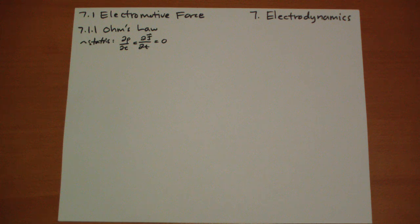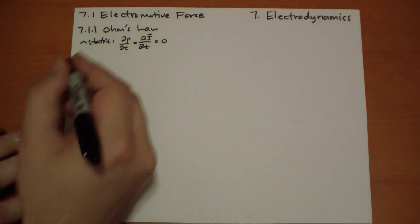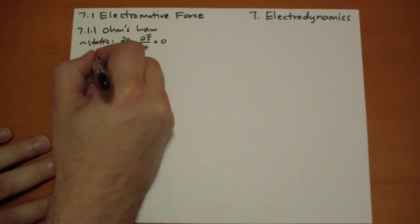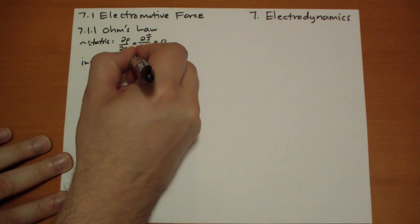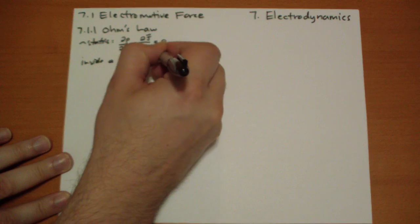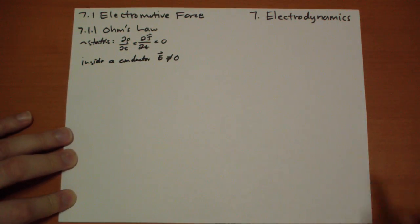And when you start having a steady current in a conductor, no longer is that true. So inside a conductor is not necessarily zero. It may not be zero.